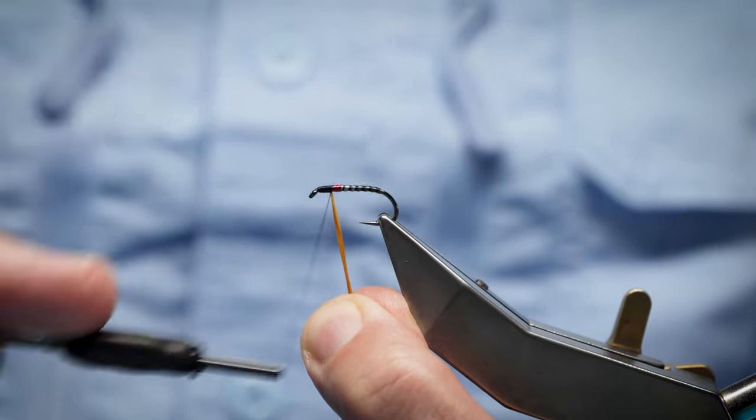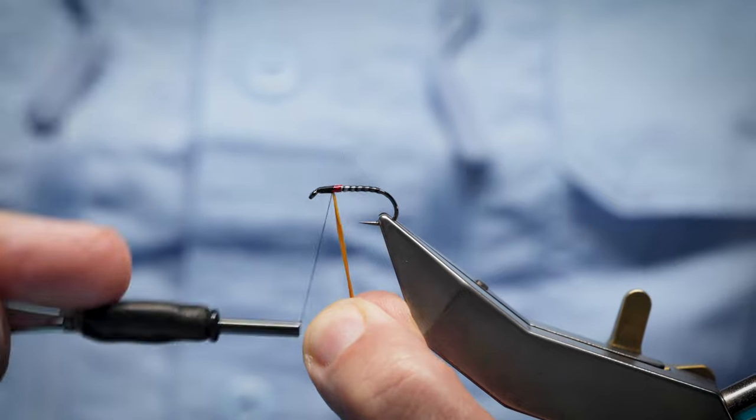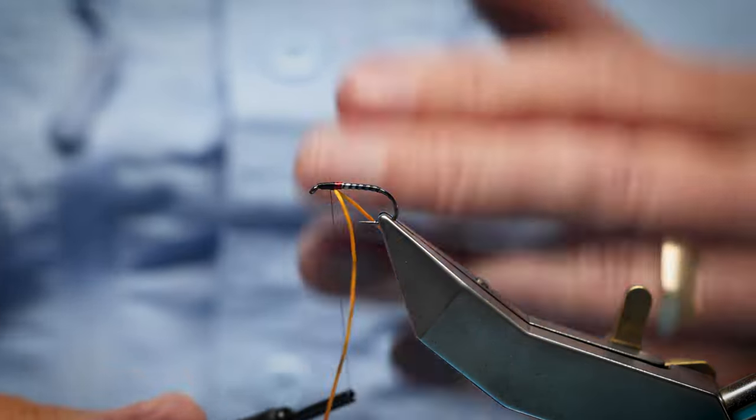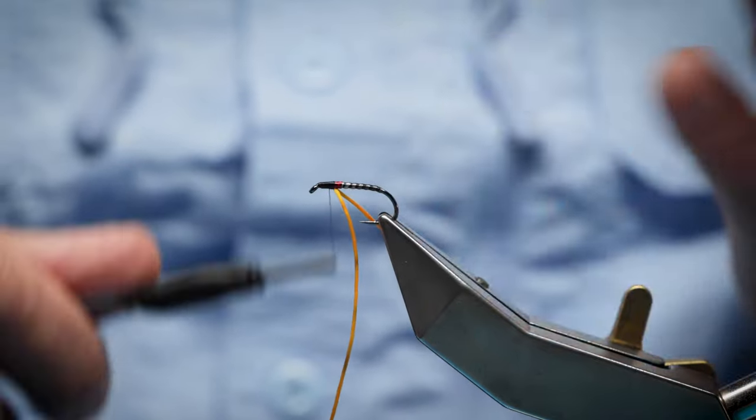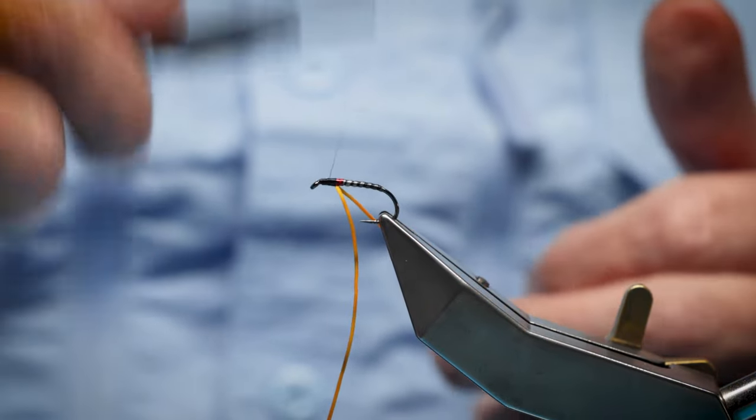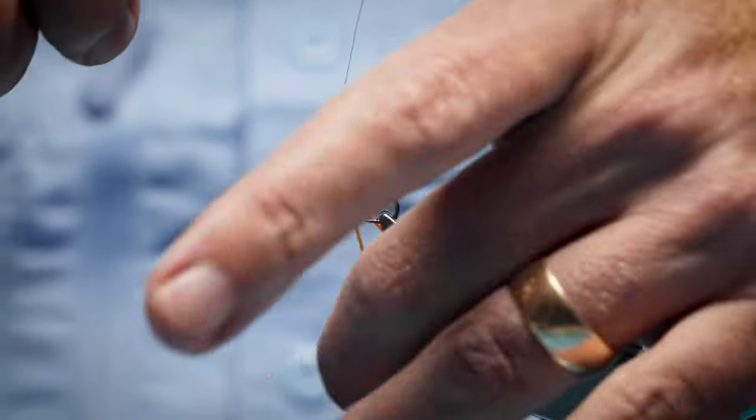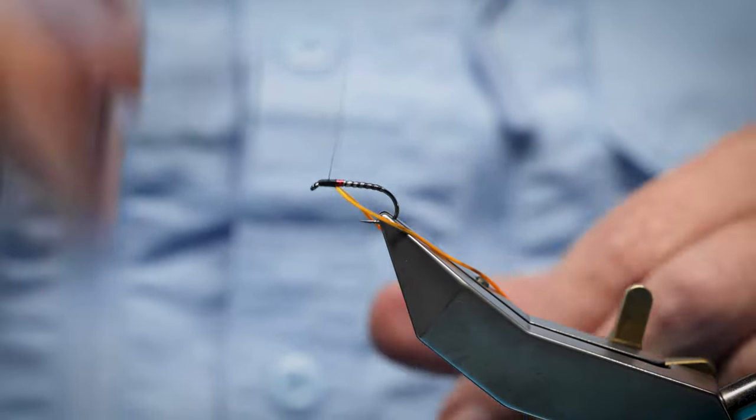Now you could put a thorax cover on this, but this fly doesn't need it – it's got enough color. So what I'm going to do is just build up the thorax a bit so I've got a nice taper. Just hold it out of the way and just think of a shape – you can get the shape with the resin as well.